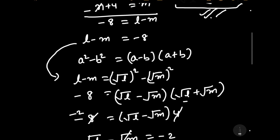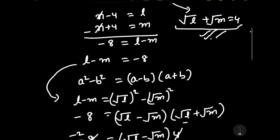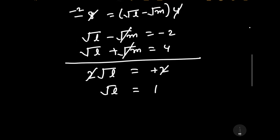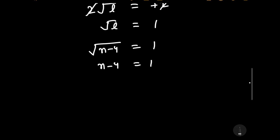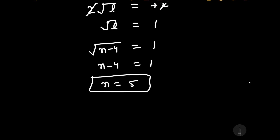The value of l is n minus 4. Substituting, square root of (n minus 4) is equal to 1. Squaring both sides, n minus 4 is equal to 1, therefore n is equal to 5. And this is our required answer.